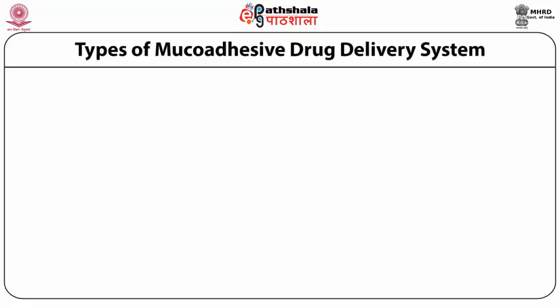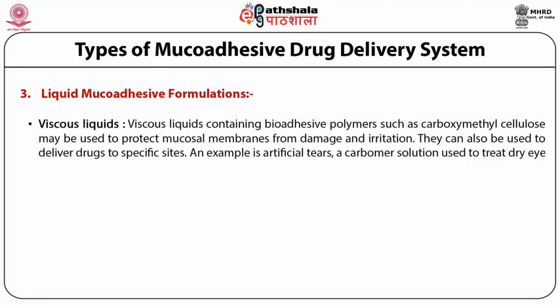Liquid mucoadhesive formulations can be understood under two types: viscous liquids and gel-forming liquids. Viscous liquids containing bioadhesive polymers such as carboxymethyl cellulose may be used to protect mucosal membranes from damage and irritation, and to deliver drugs to specific sites. A typical example is artificial tears, which is a carbomer solution used to treat dry eye syndrome.